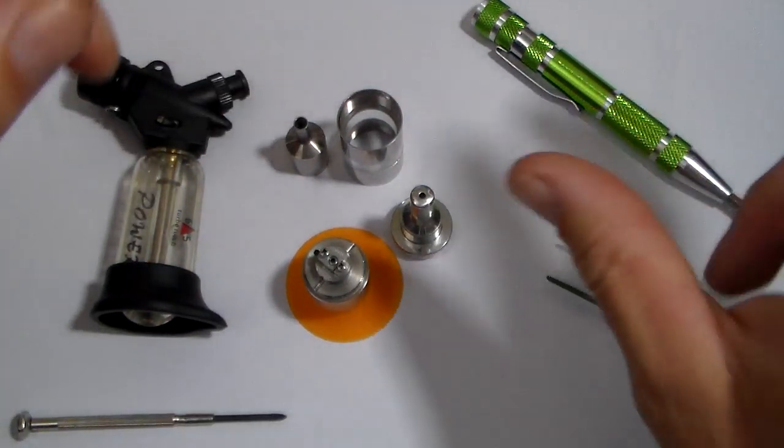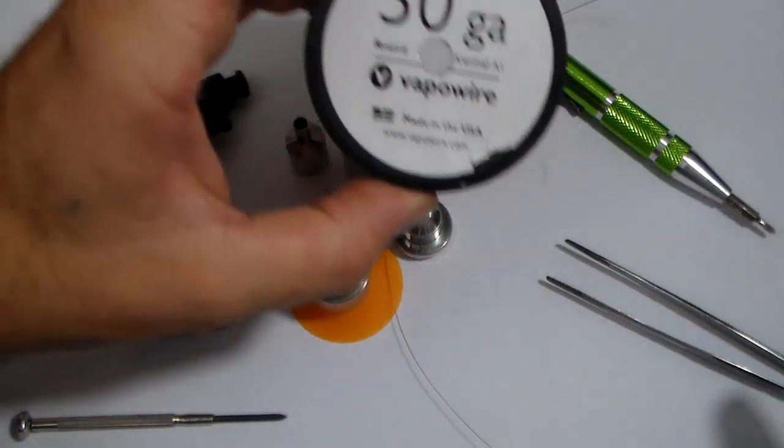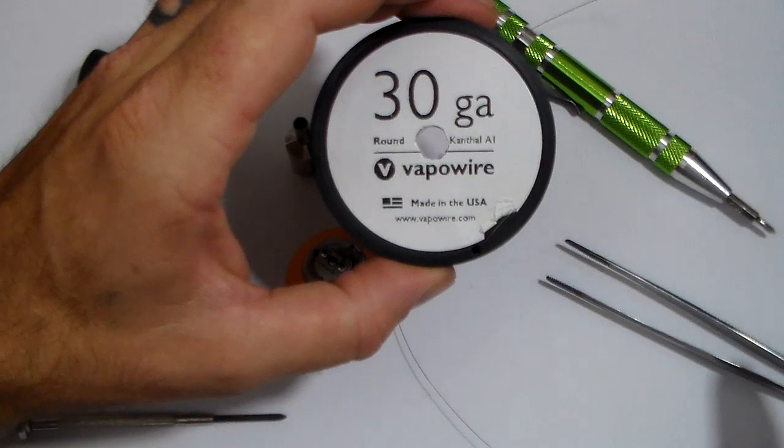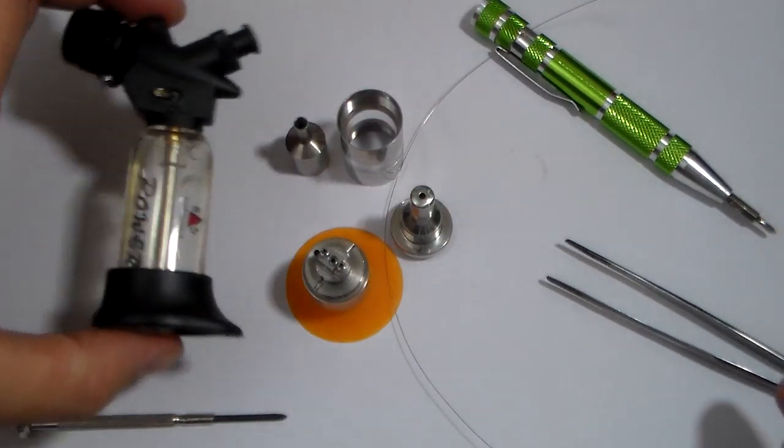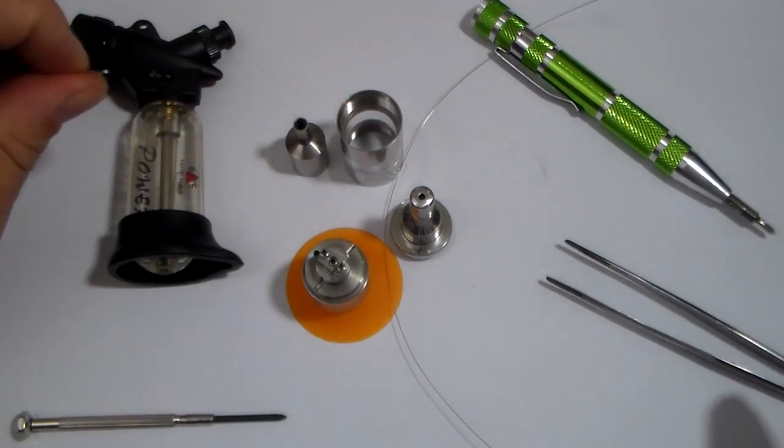I have about 18 inches of 30 gauge Kanthal. This time we're using 30 gauge from VapoWire. A micro torch or anti-torch, and your Kayfun. So let's get to building, shall we?